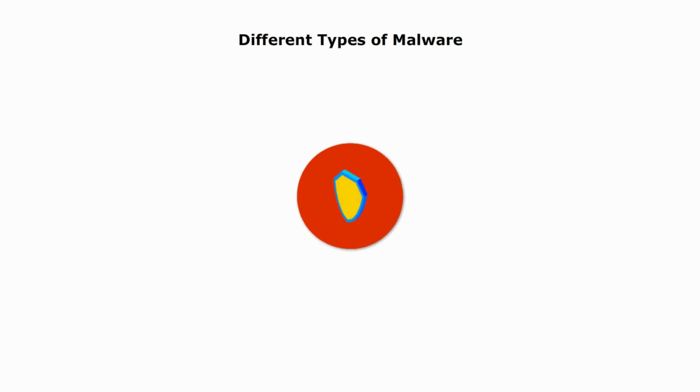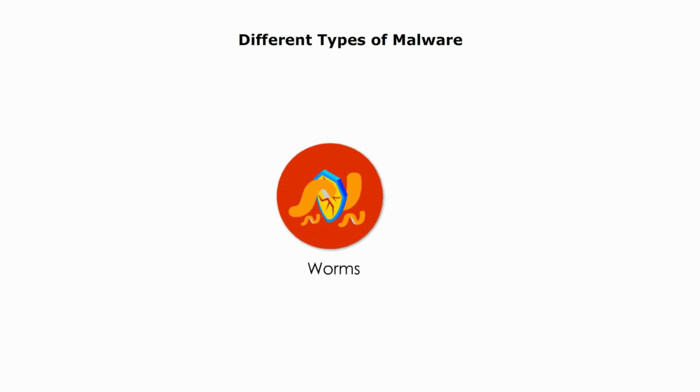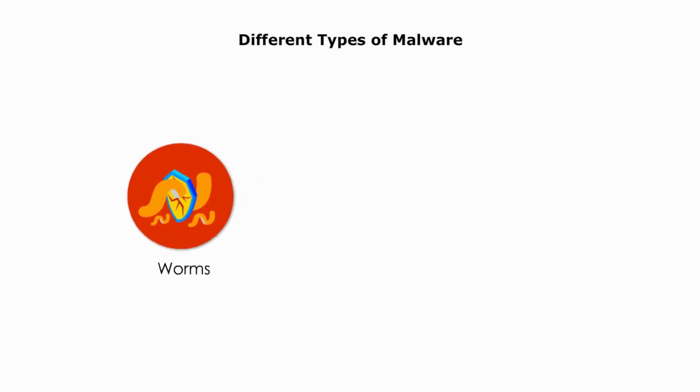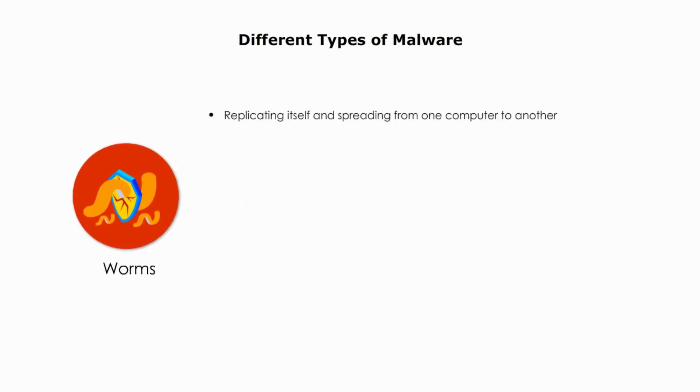Worms. A computer worm is a type of malware that can replicate itself and spread from one computer to another without the need for human interaction.